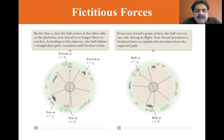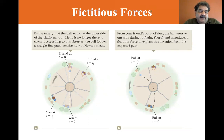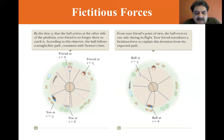With a Foucault pendulum you'll see a very slow Coriolis effect where the pendulum appears to change direction — when really it's the Earth's rotation that's causing the change in direction of the Foucault pendulum.